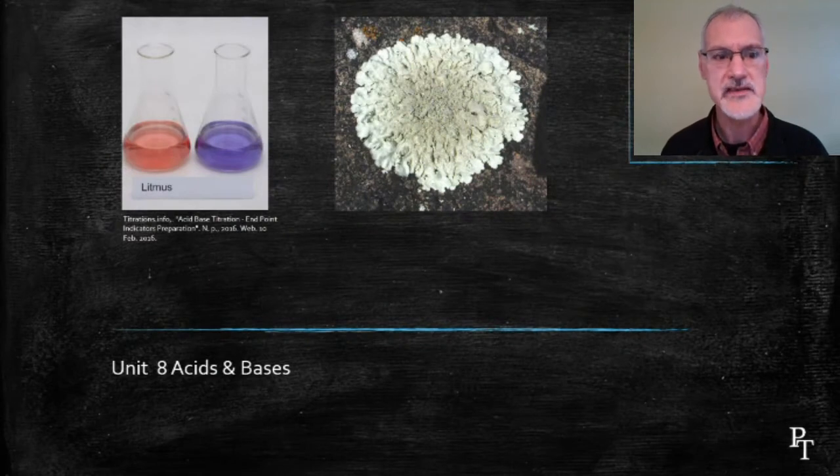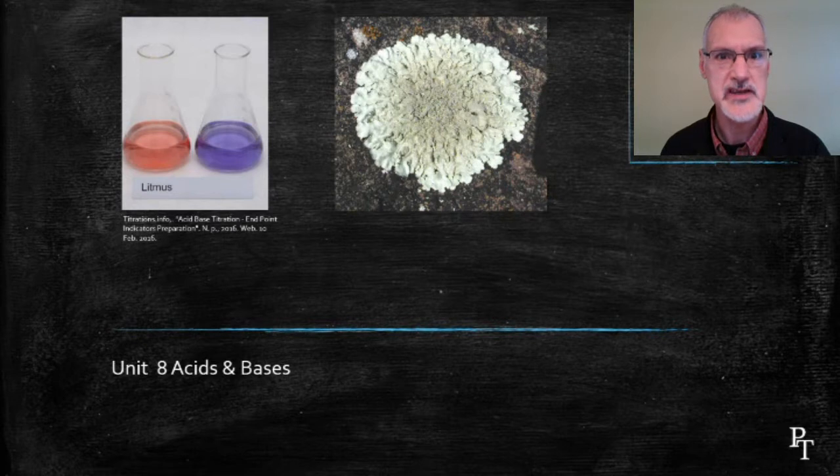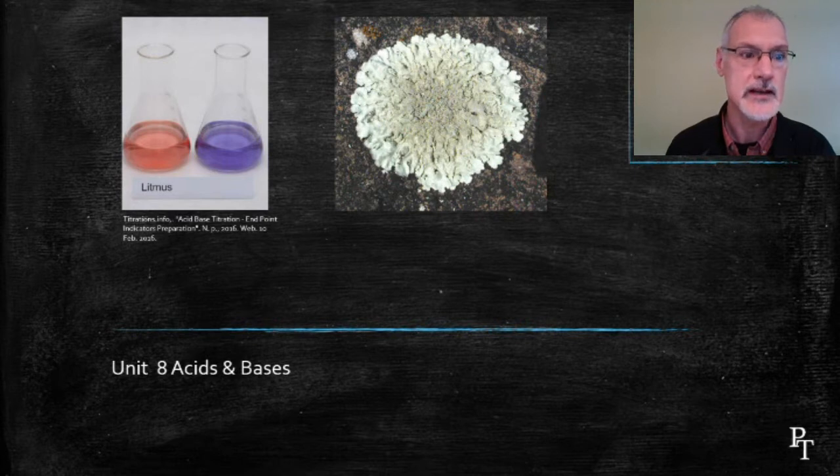This is an introduction to the unit on acids and bases. One of the earliest ways to classify an acid or base was its behavior with litmus, an extract from rock lichen. In the presence of acids, litmus would turn red, and in the presence of bases, it would turn blue.